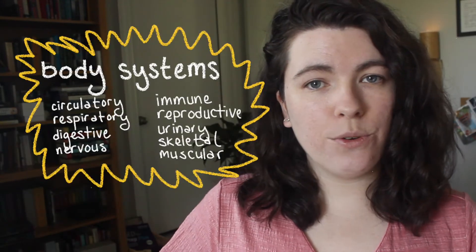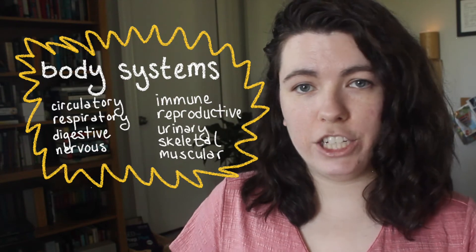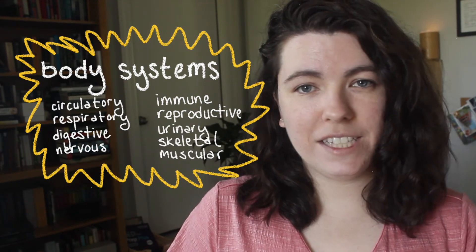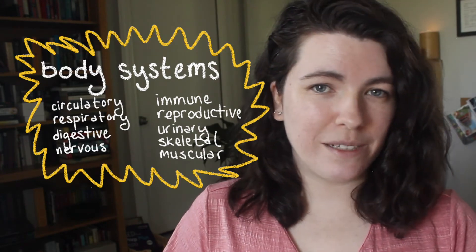Body systems include the circulatory, respiratory, digestive, nervous, immune, reproductive, urinary, skeletal, and muscular systems. We'll go over a few of the big ones, but if you're not familiar with each body system and what it does, I recommend that you spend time learning about each one. It could definitely be useful for you on the GED test — and it's also just important for you as a human to understand how your body works.